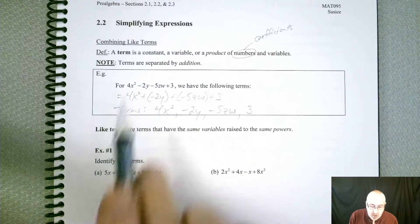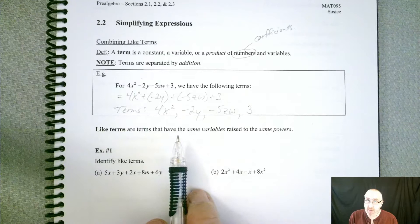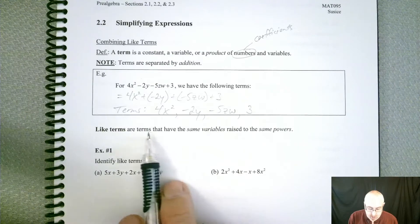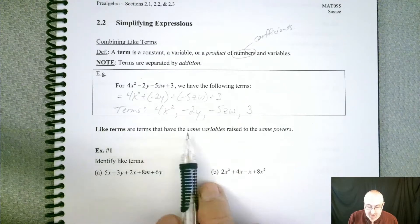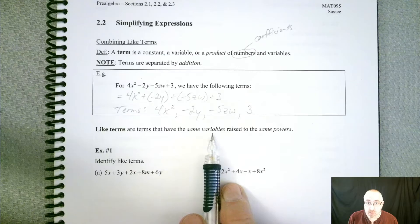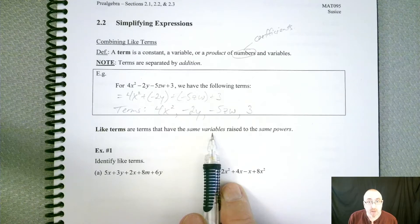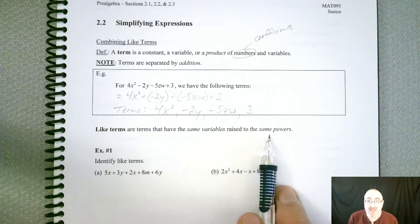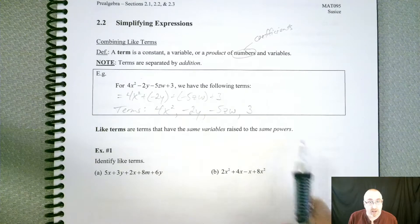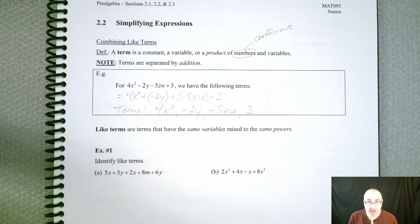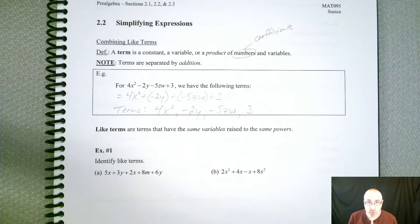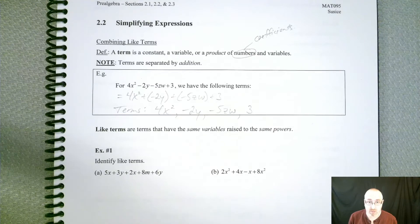So we got the terms are 4x to the second. We have a negative 2y, a negative 5zw, and then the 3. All by itself is considered a term. When they talk about like terms, then we have to put in some additional conditions. So like terms are terms that have the same variables. So they might have more than one variable in there. But they also have to be raised to the same powers.